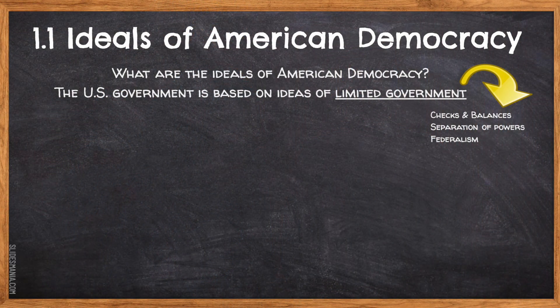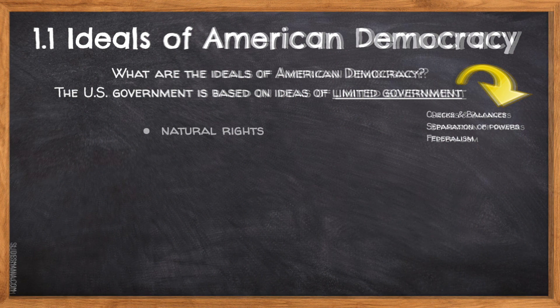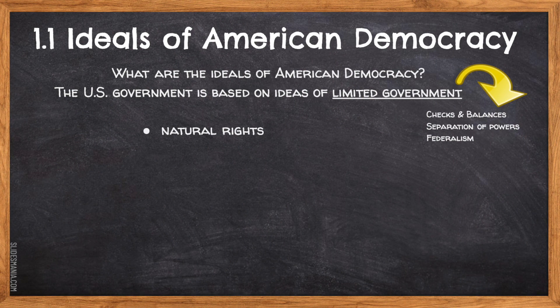So the first ideal of American democracy is the idea of natural rights. As you recall, John Locke said that those natural rights include life, liberty, and property. And most importantly was property — John Locke argues that government should never touch the private property of citizens.